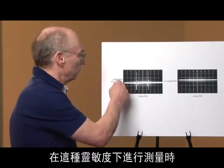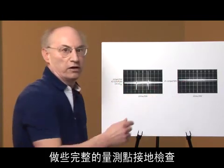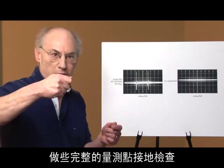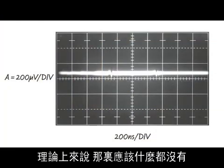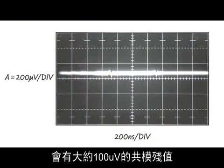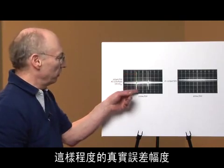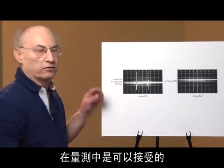When you take a measurement at this sensitivity, it's always wise to sanity check yourself by probing coaxially the ground plane at the point of measurement. In theory, there should be nothing here. In practice, there's about a hundred microvolts worth of common-mode residue. That's acceptable in a measurement where the true error amplitude is as high as this is.